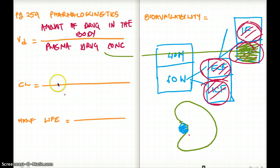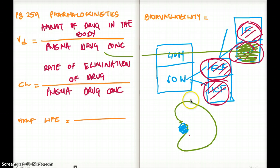Let's do clearance. Clearance has the exact same denominator, so this is also going to be plasma drug concentration in the denominator. On the numerator is going to be rate of elimination of drug. Rate of elimination of drug is going to be clearance. So that is our volume distribution and that's our clearance.